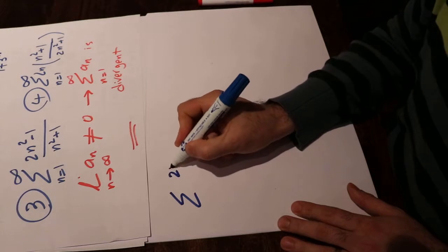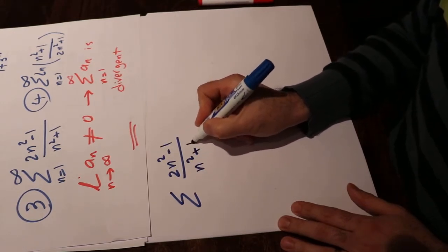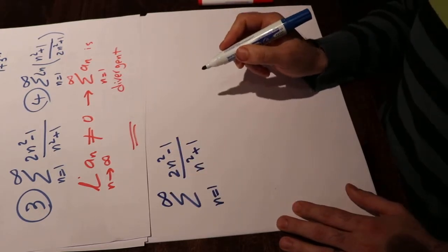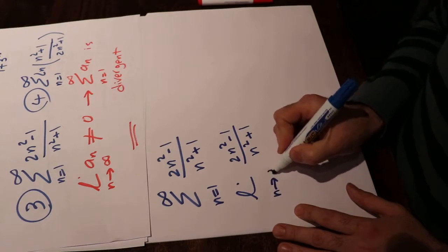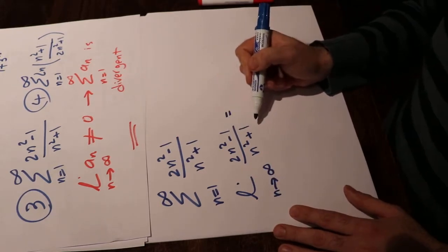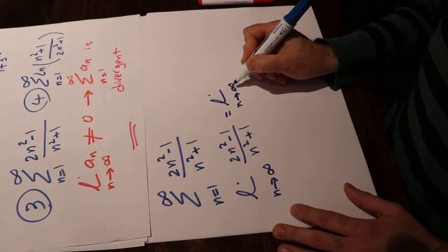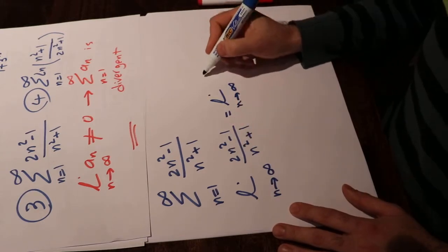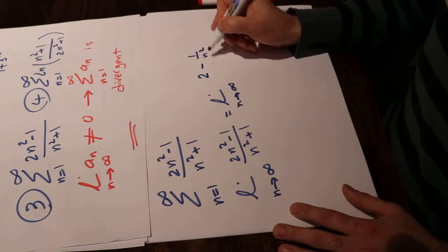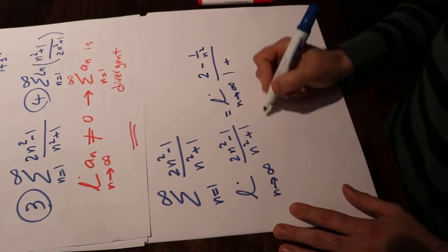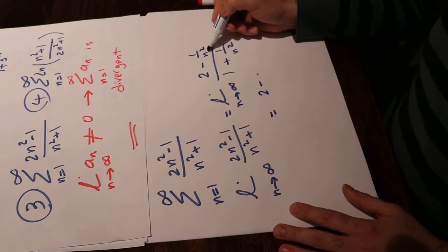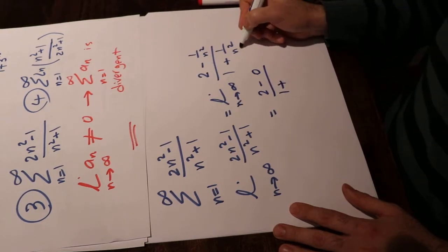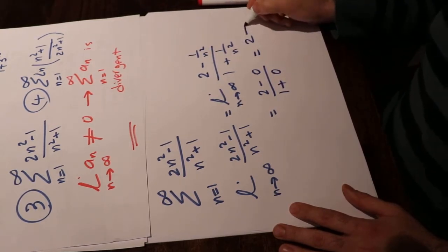Now let's look at the third series: sigma (2n²-1)/(n²+1) from n=1 to infinity. We need to calculate the limit of (2n²-1)/(n²+1) as n goes to infinity. Dividing numerator and denominator by n², we get (2 - 1/n²)/(1 + 1/n²). As n goes to infinity, 1/n² → 0, so the limit equals 2/1 = 2, which is not equal to 0.